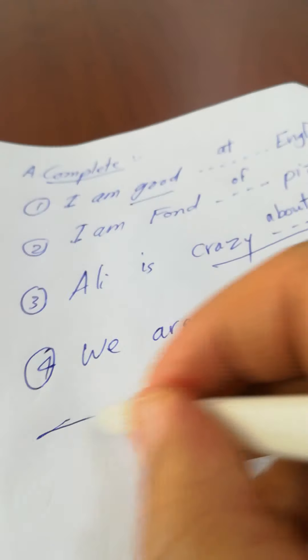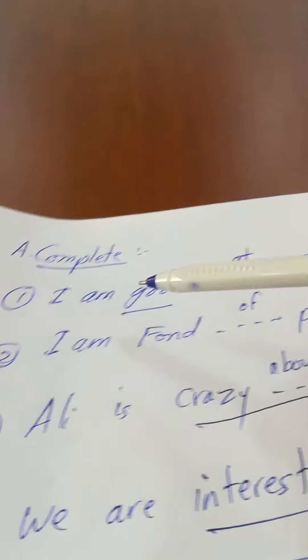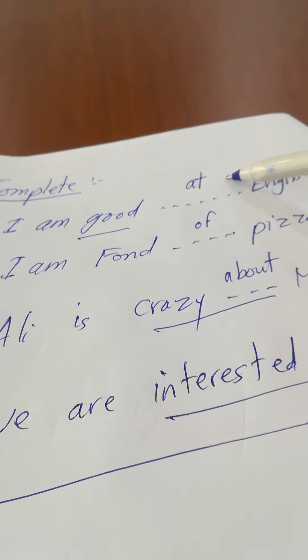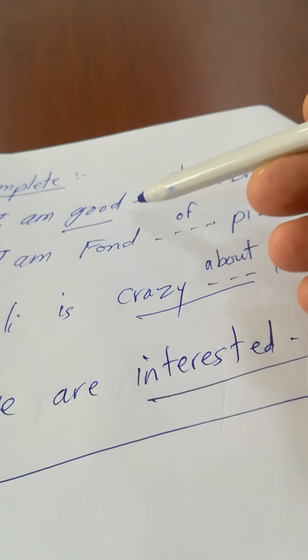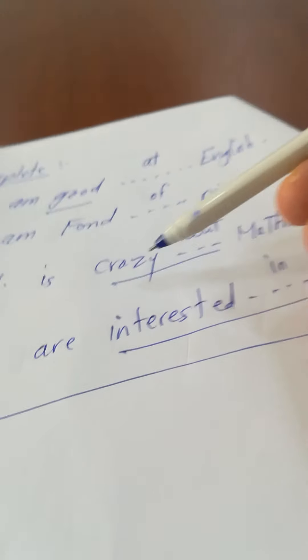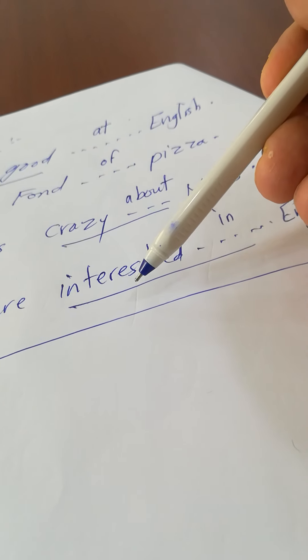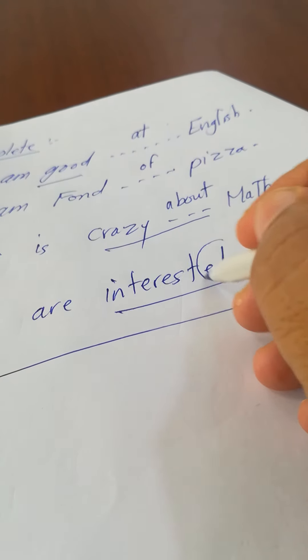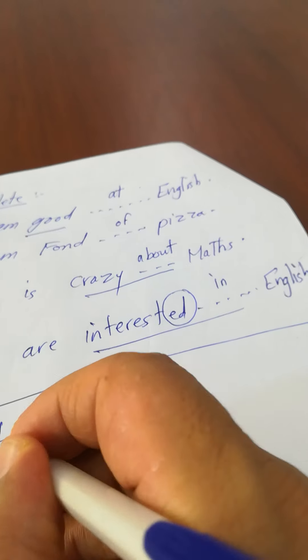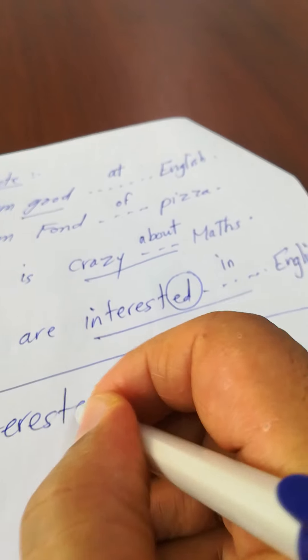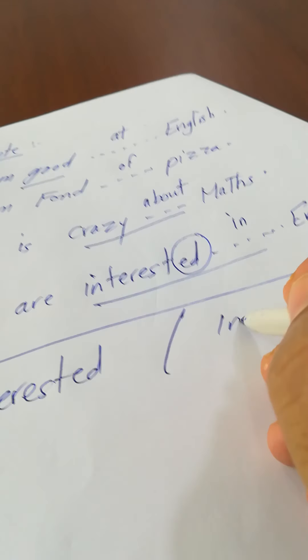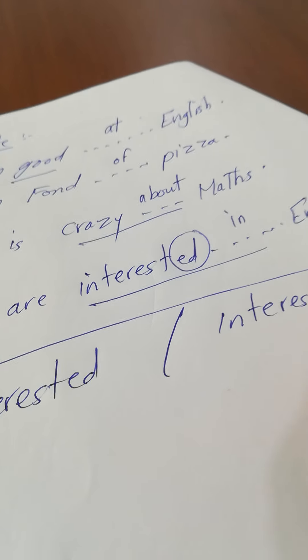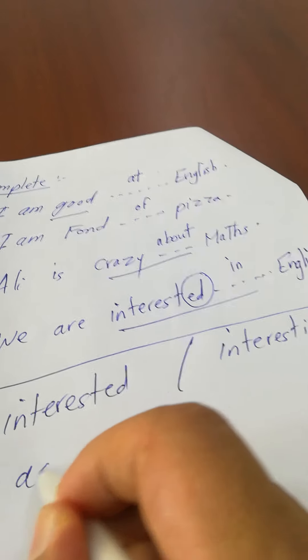All of these are adjectives: good at, fond, crazy, interested. And now I want to mention something else. What is the difference between interested, for example, and interesting? This is an adjective and also this is an adjective too, but what is the difference?